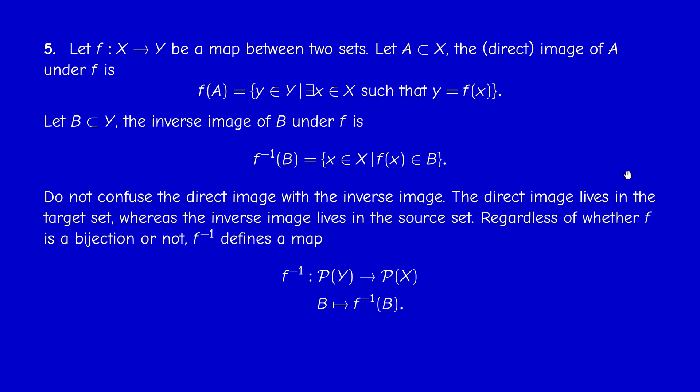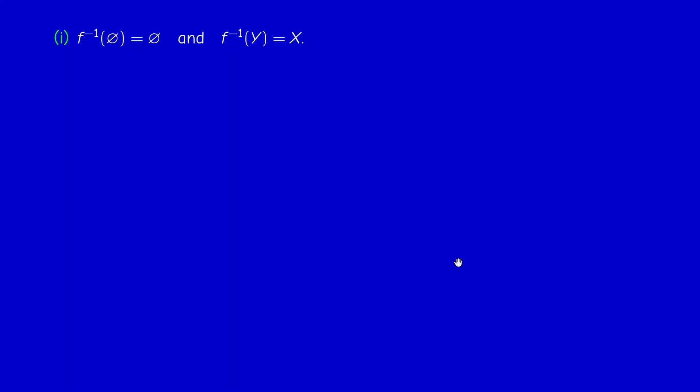If F is a bijection, then F minus one is a function. But in general, F minus one is a map from this power set of Y into the power set of X because it takes subsets, even if F is not a bijection. F minus one is not a function from Y to X unless it is bijective. But in general, it's a function. Know the difference. F is a function from X to Y. But F minus one, in general, is a function from the power set of Y into the power set of X.